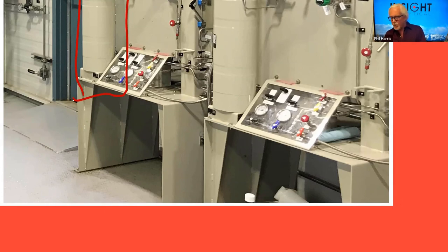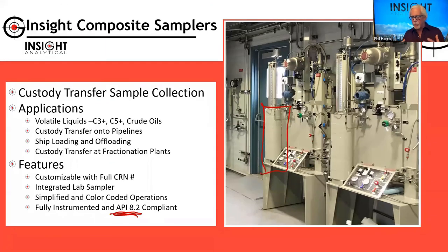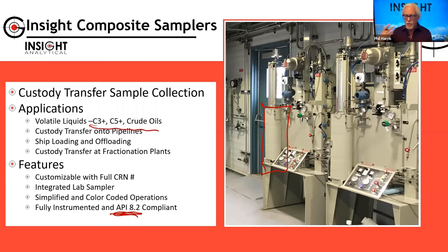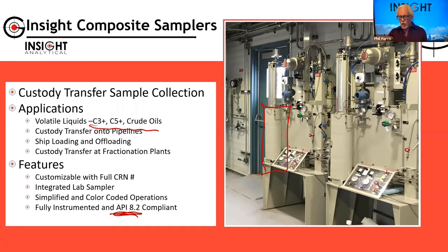We have a big project on the go right now that we think will involve about 20 of these units. We've got a number installed in the field with several different companies. These are liquid composites — as compared to gas composites — so these are for propane, C5 plus, natural gas condensate (what the US often calls natural gasoline), and crude oil type applications.